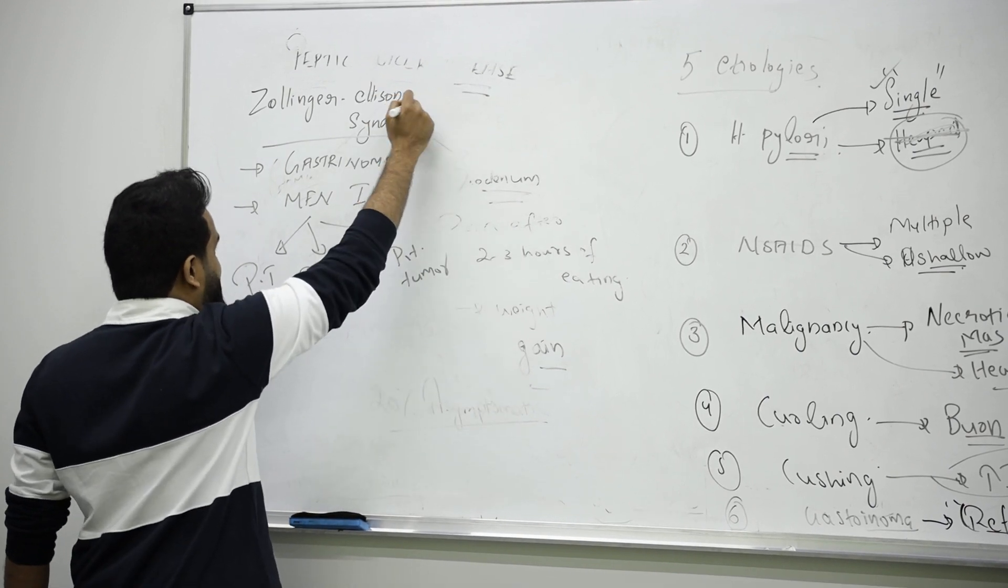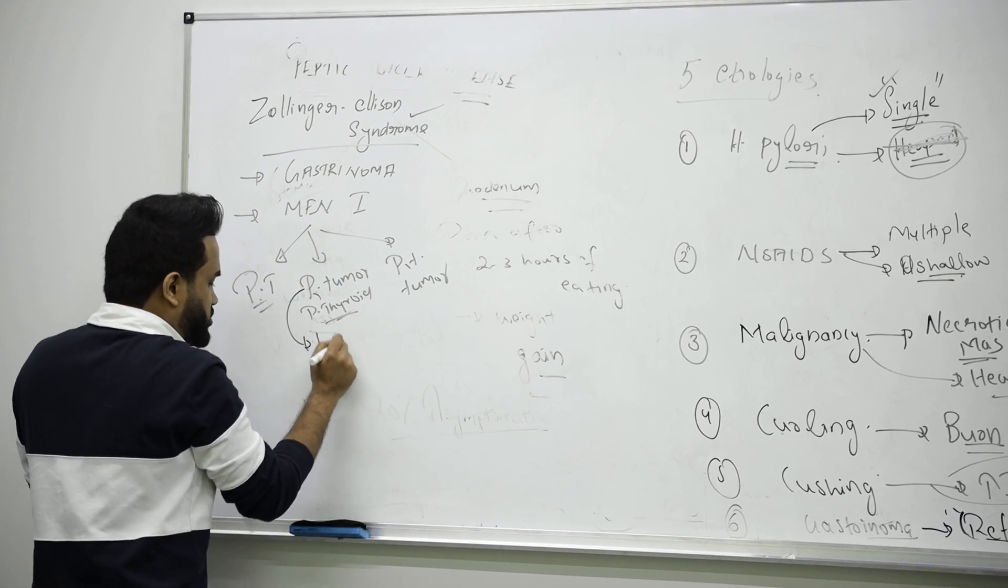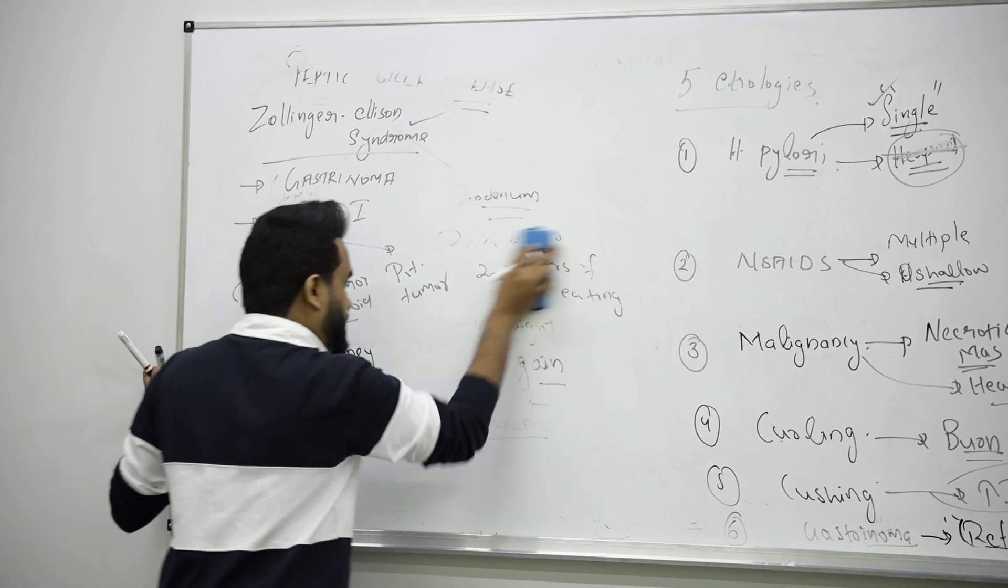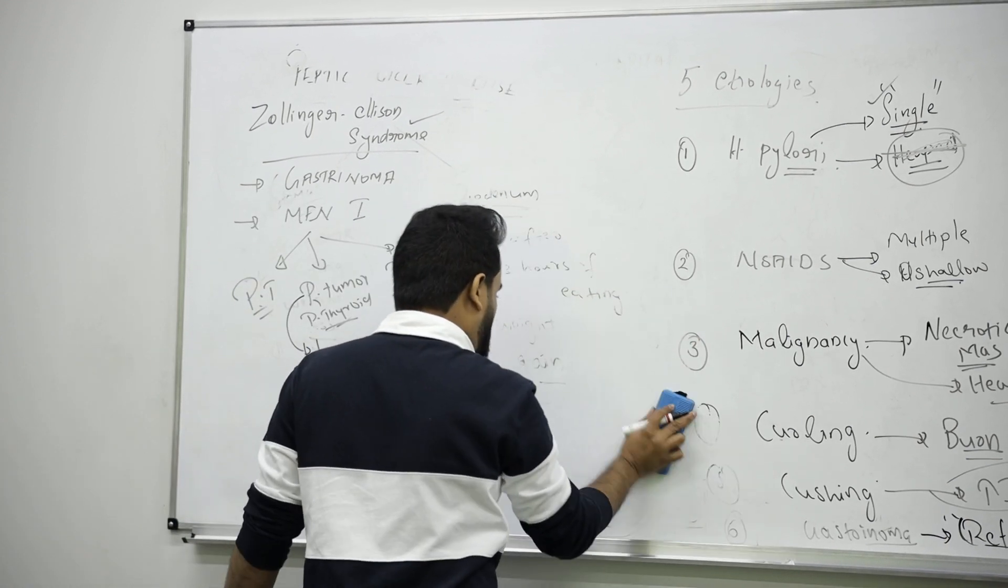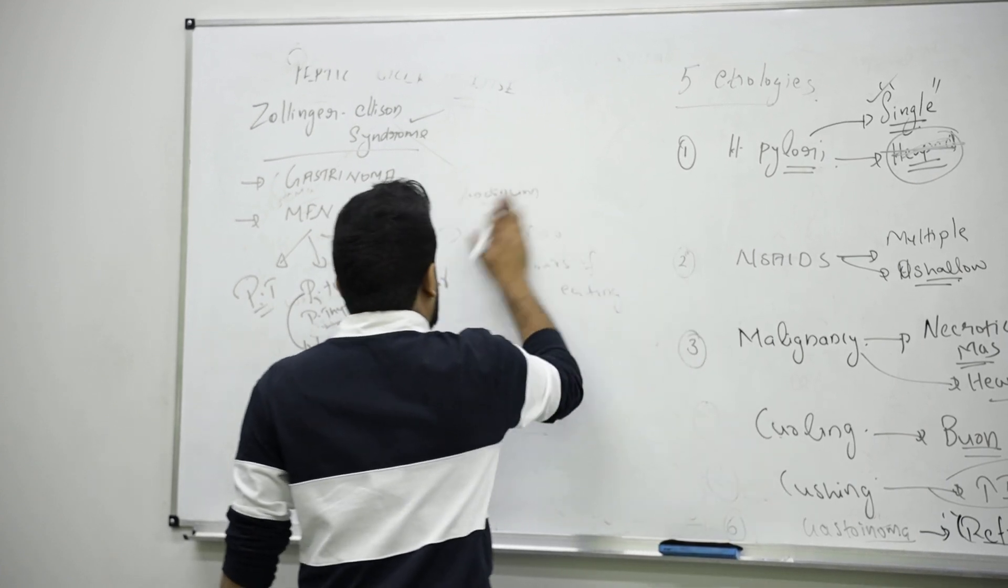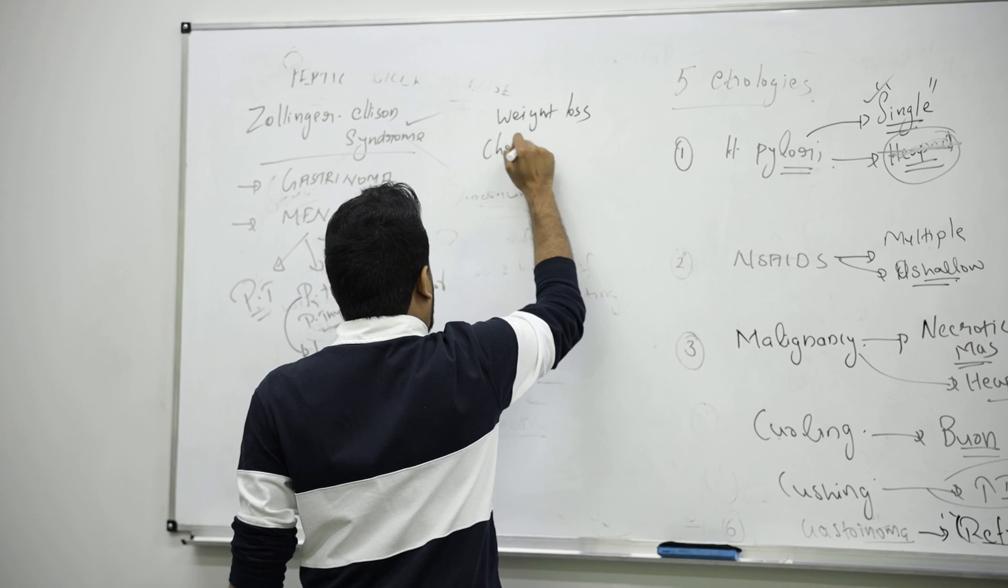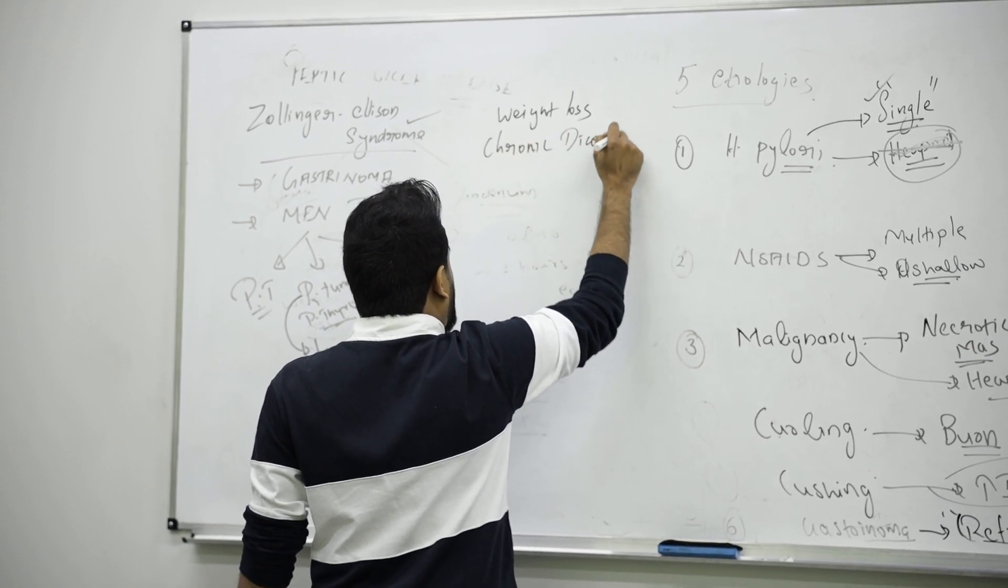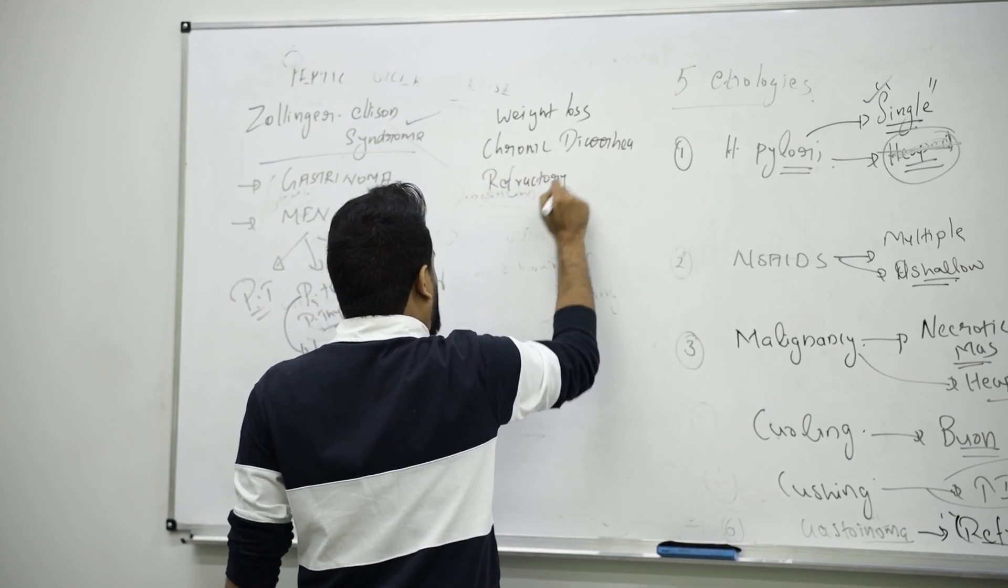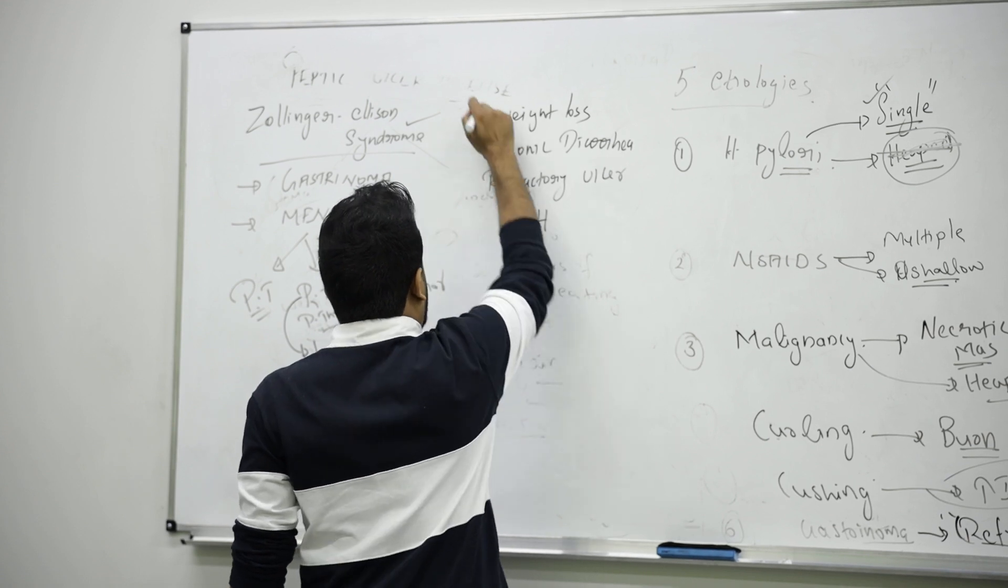If someone has ulcer along with parathyroid tumor, remember they can cause kidney stones. So please make sure whenever you get a question about Zollinger-Ellison, you think about kidney stones also. Here the patient will have weight loss, chronic diarrhea, and refractory ulcer. There will be a lot of acid, so decreased pH will be the main finding here.